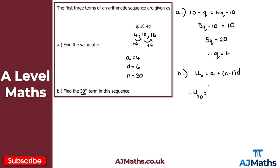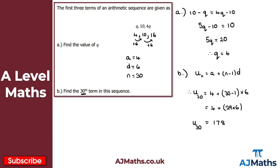Substituting into the formula: u30 = 4 + (30 − 1) × 6 = 4 + 29 × 6. Put this into your calculator and you should get 178. So the 30th term in the sequence is 178. That's our solution to question 2.